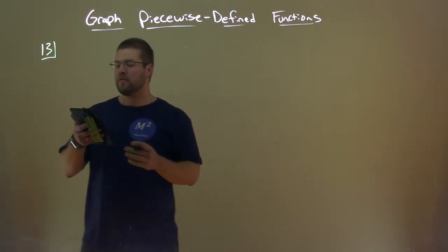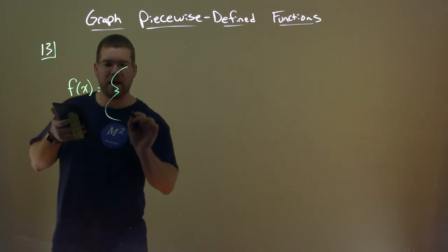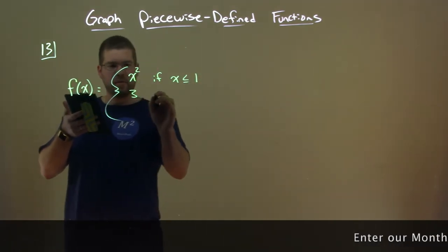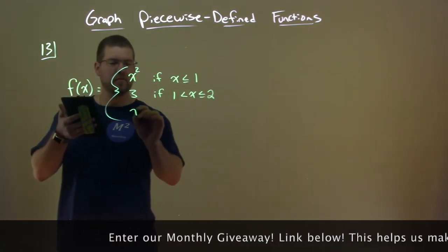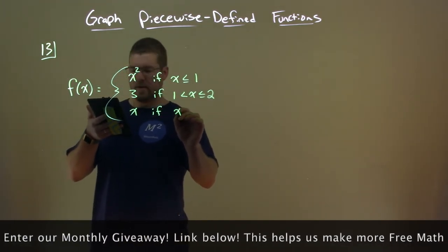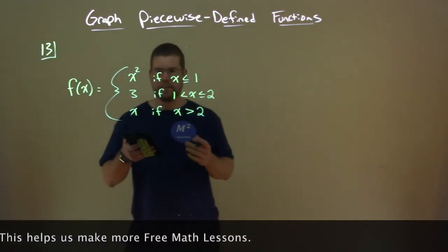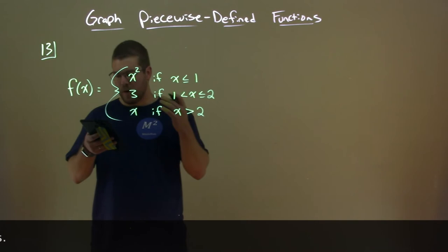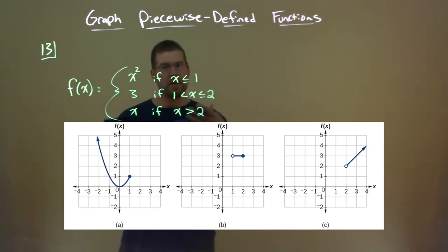All right. So we have this piecewise function and we want to graph it. Our piecewise function is f of x equals, curly bracket, x squared if x is less than or equal to 1, it's equal to 3 if 1 is less than x which is less than or equal to 2, and it's equal to x if x is greater than 2. All right. So a few things we want to note here. I like to graph each one individually first. So graph each one individually first and we can see the overall picture once we combine them.